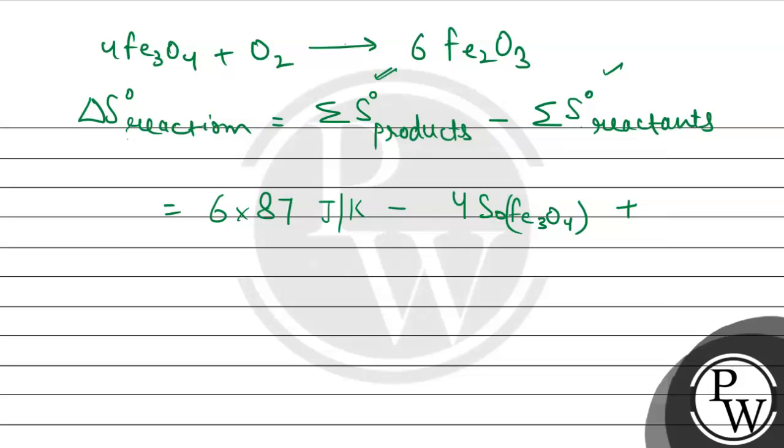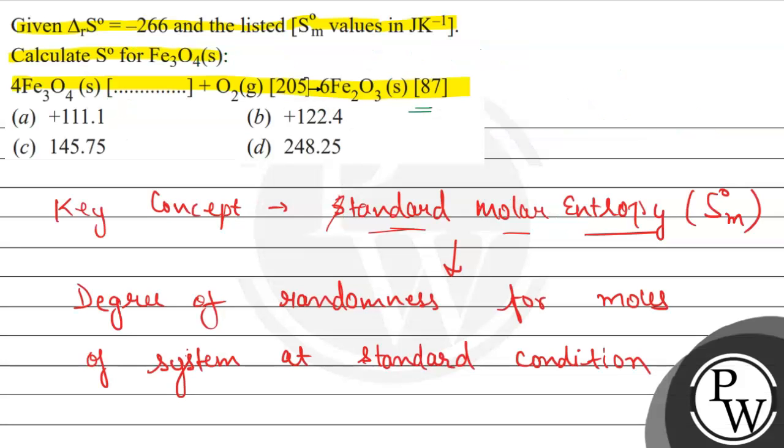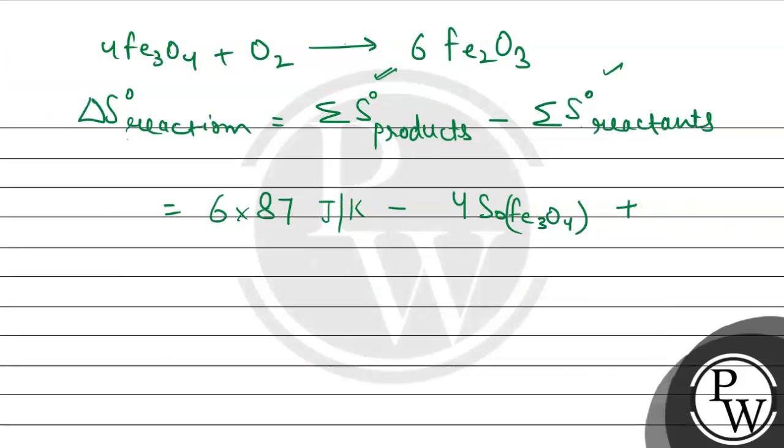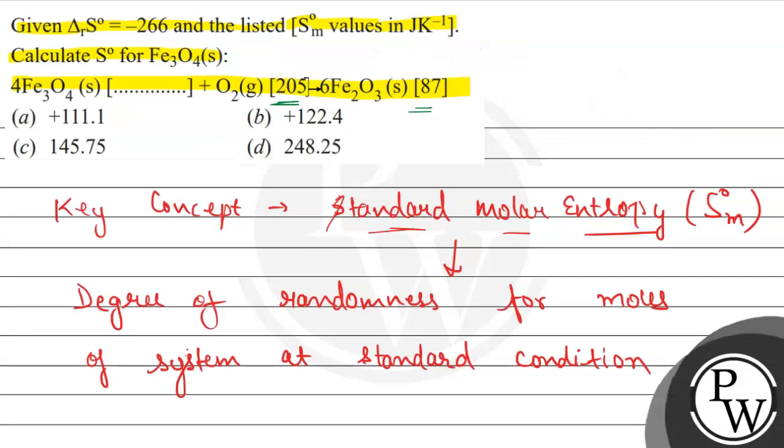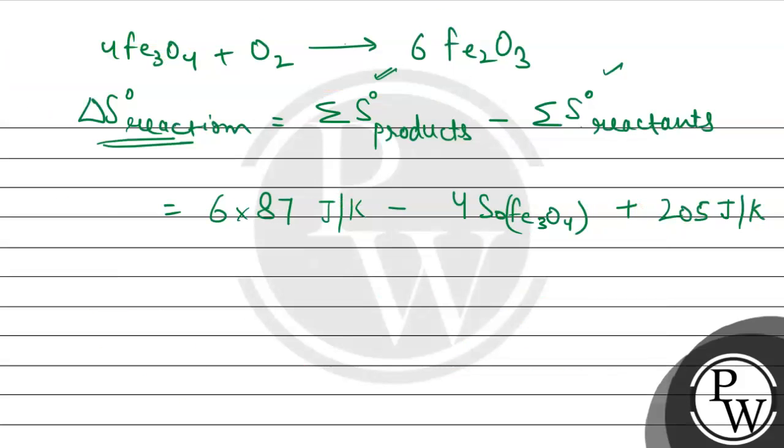And plus for the oxygen molecule, the entropy for the oxygen given is 205 joule per kelvin, so here it will be 205 joule per kelvin. Now we have to rearrange this and the reaction value is also given in the question and that is equal to minus 266 joule per kelvin.